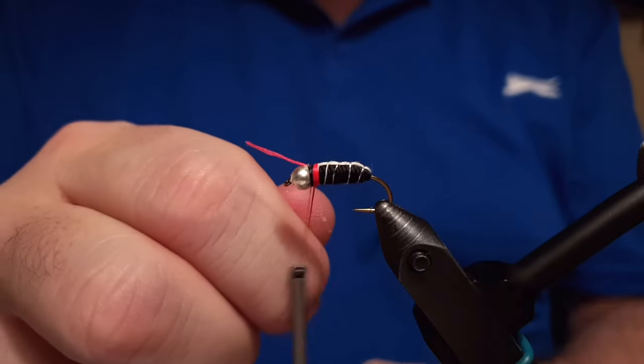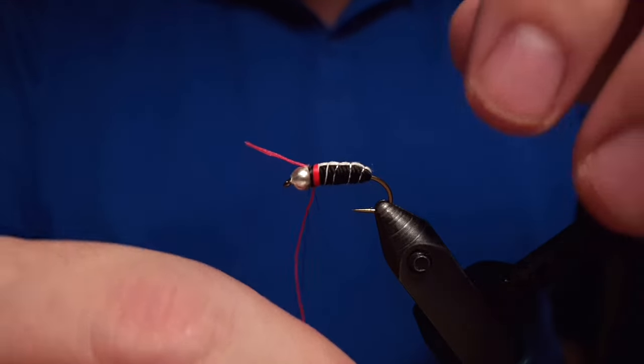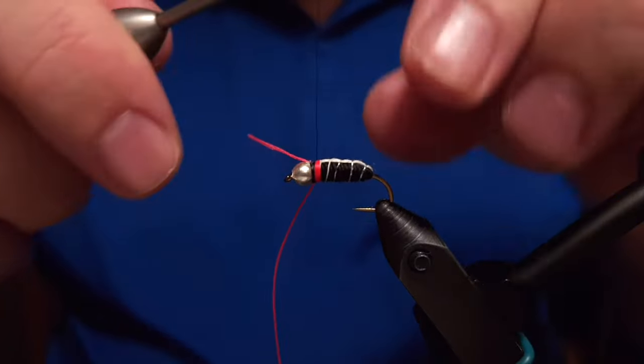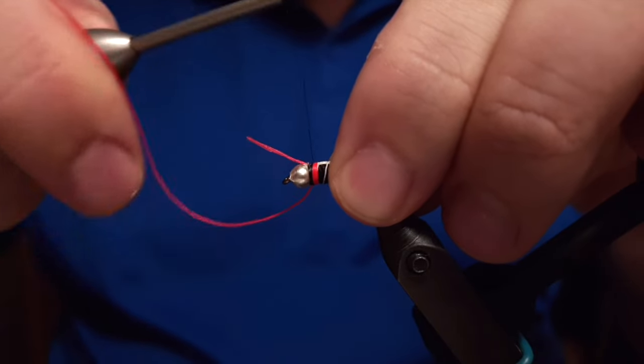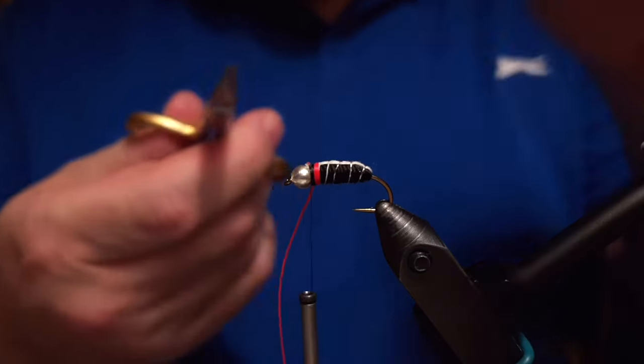Something like that. Then we'll tie down the hackle, make sure it's in place, and snip off the tag ends. That's about it.